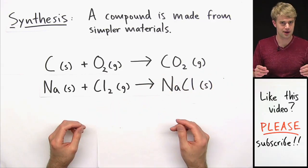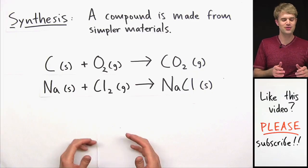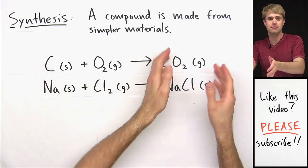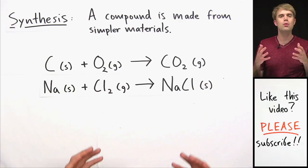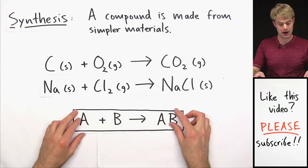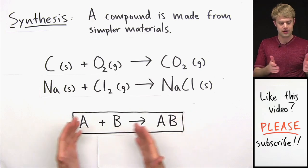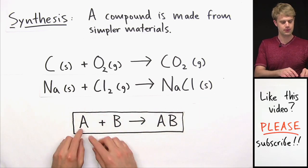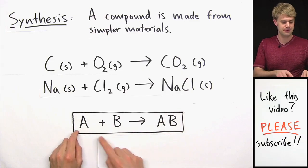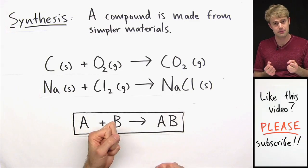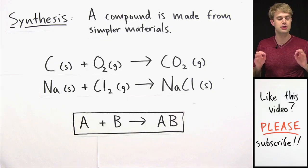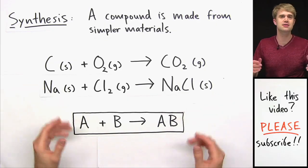A synthesis reaction is one where we start with simple materials and put them together to make something more complex. If we want to represent a synthesis reaction more generically, we could say it looks kind of like this: we have A and B combining to make AB, where A and B are different elements or compounds coming together to make something more complex. So that's a synthesis reaction.